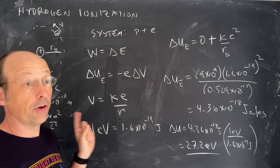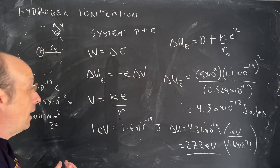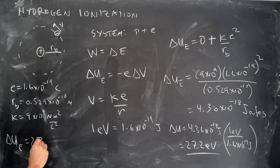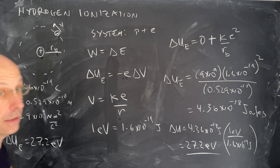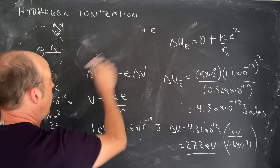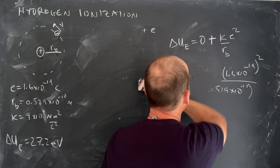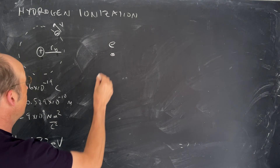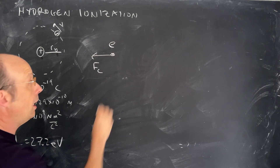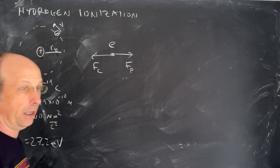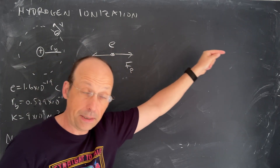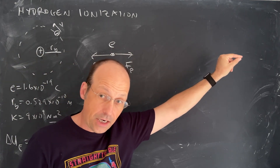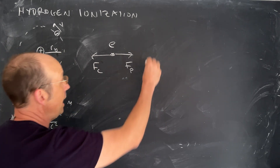Okay, that's not the real answer, because the real answer might surprise you. But let's do this another way — ΔUe is 27.2 eV. Suppose I wanted to calculate the work using the force instead. If I have the electron over here, there's going to be an attractive Coulomb force FC pulling it back, so I'm going to have to push on it with force FP in the opposite direction. Those would have to be equal to move it at constant speed and not change the kinetic energy. As I move further away, that force is going to decrease.